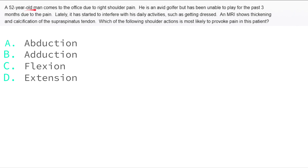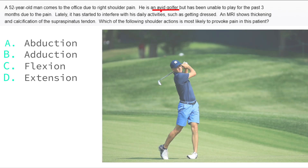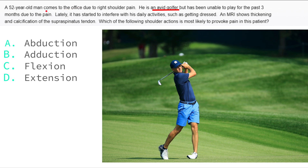A 52-year-old man comes to the office due to right shoulder pain. He is an avid golfer but has been unable to play for the past three months due to the pain, which has started to interfere with daily activities such as getting dressed. An MRI shows thickening and calcification of the supraspinatus tendon. Which of the following shoulder actions is most likely to provoke pain in this patient?